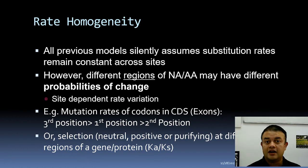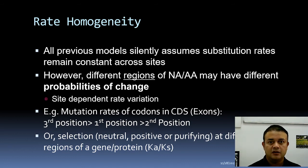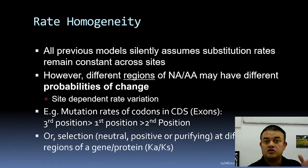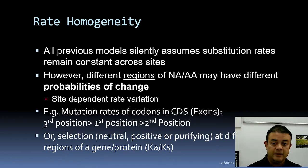For example, in pathogenic organisms, antigen-determining epitopes can mutate at much faster rates. Different regions of a nucleic acid or amino acid sequence may have different probabilities of change — called site-dependent rate variation. In proteins, loop sections between structural domains can change more readily than domains forming secondary or tertiary structure.